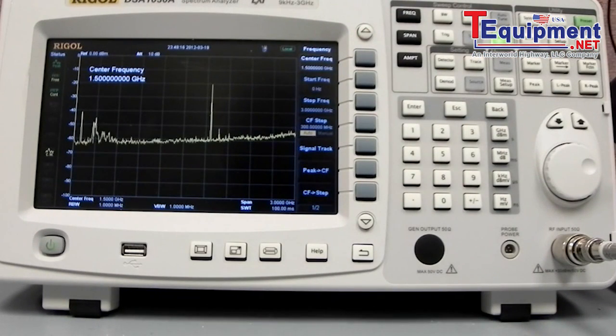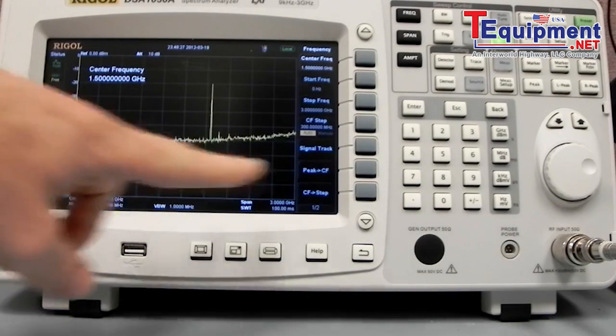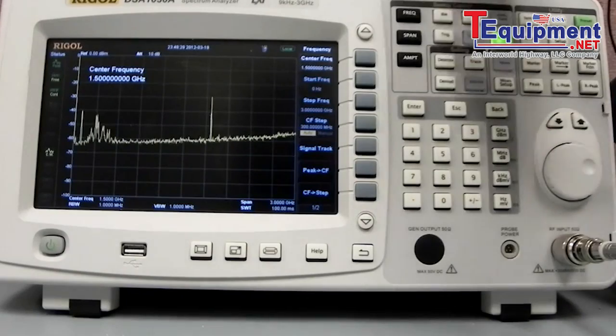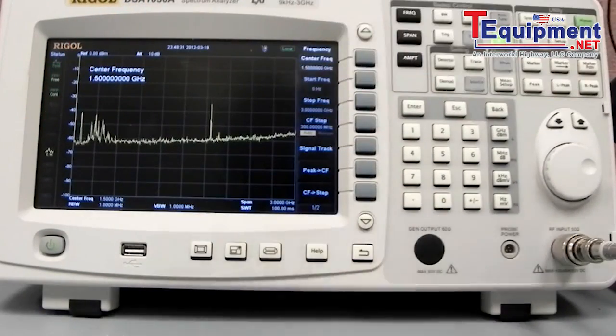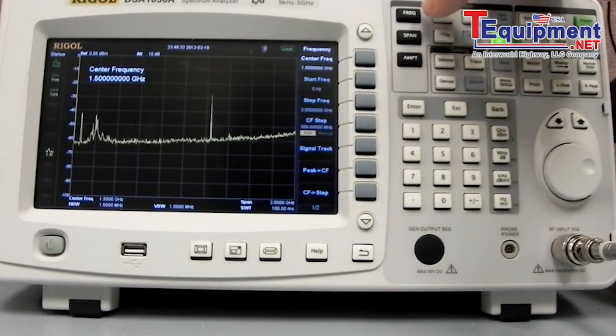I'm going to disable the output on the function generator, and then I'm going to enable it, and turn it off, and you can see it down here. So we're doing a full spectral scan here. This is from 0 to 3 GHz with this particular model.